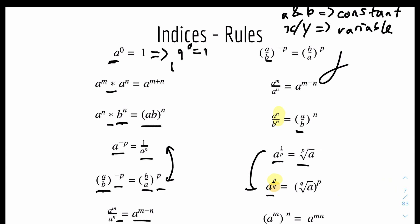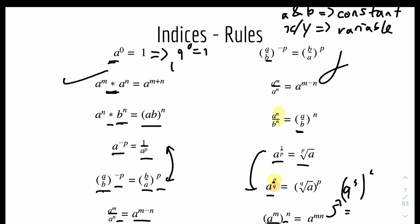The last rule is: (A to the power of M) to the power of N equals A to the power of MN. This is slightly different to the multiplication rule — here the power itself has a power. In indices, there's no such thing as a power of a power, so you multiply the powers together. For example, (9 to the power of 3) to the power of 2 equals 9 to the power of 6, because 3 times 2 equals 6.